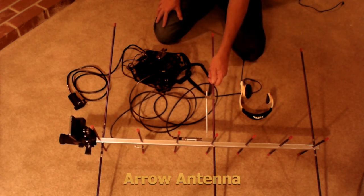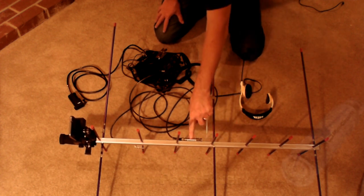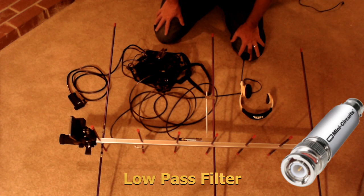Of course, we have an Arrow antenna. With the Arrow antenna, I've also included a filter. On linear satellites, like all other satellites, you can either uplink or downlink on UHF or VHF.